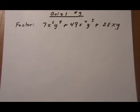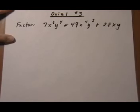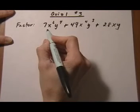Quiz 1 number 3. Here we have a trinomial and we want to factor it. So the first thing we always want to do when we're factoring is try to pull out a GCF. So let's see what all of these terms have in common.